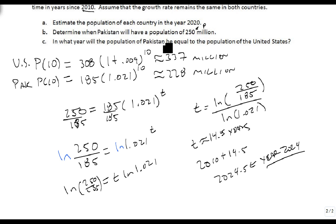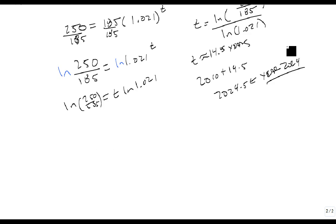When will the population of Pakistan be equal to the population of the United States? Here, we want to know when will 308 times 1.009 to the t equal 185 times 1.021 to the t? The first thing I'm going to do is divide this side by 1.021 to the t and divide by 308.